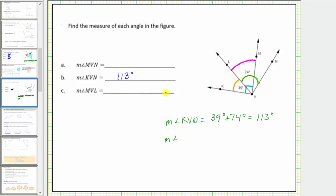The measure of angle MVL equals 90 degrees minus 39 degrees, which equals 51 degrees.